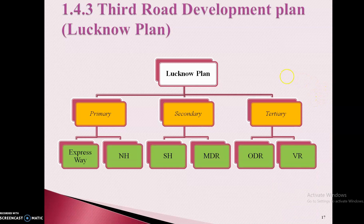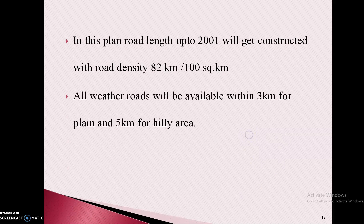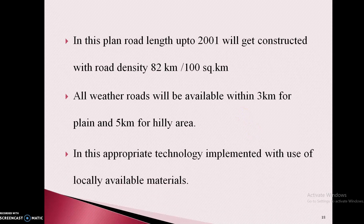We will go forward and study in detail about all these specifications, their meaning, standards, etc. But before that, we will see for what purpose this plan was modified. In this plan, road length up to 2001 will get constructed with road density 82 kilometers per 100 square meters. Second, all-weather roads will be available within 3 kilometers for plain and 5 kilometers for hilly areas. In this, appropriate technology is implemented with the use of locally available materials. As compared to the Nagpur Road Plan, there are few modifications like road density and availability of roads according to terrain.